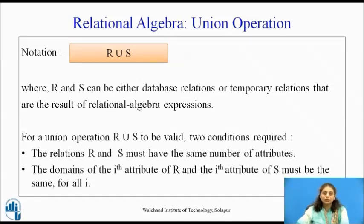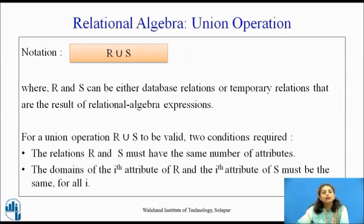First we will start with the union operation. Consider R union S — we are taking the union operation of two database relations or temporal relations that are the result of other relational algebra expressions. Before taking the union operation, we need to check whether these two relations are compatible. Compatible means they must have the same number of attributes, and the domain of the i-th attribute of R must be the same as the domain of the i-th attribute of S.